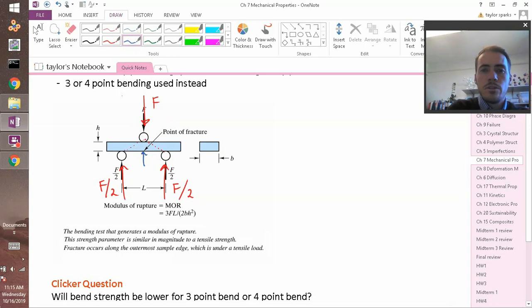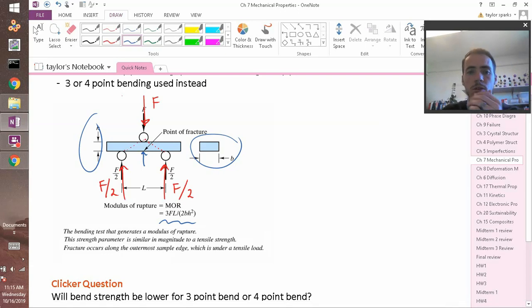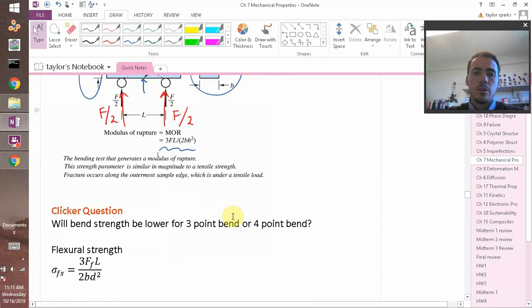So doing this, if you know the dimensions of your sample, the width, the height, the separation distance between those points, you can actually calculate something that we call the modulus of rupture. The modulus of rupture is going to be three times the force times the length separation between those divided by two times the width multiplied by the height squared. That will give you the modulus of rupture. And this turns out to be, we'd rather just do tensile testing, but since we can't, this becomes a pretty useful thing for brittle materials, high modulus brittle materials.